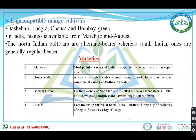Alphonso is the most popular variety in India, export quality, but susceptible to spongy tissue. Baganpalli is widely cultivated in Andhra Pradesh and is an early maturity variety of South India. Bombay Green is the earliest variety in North India.